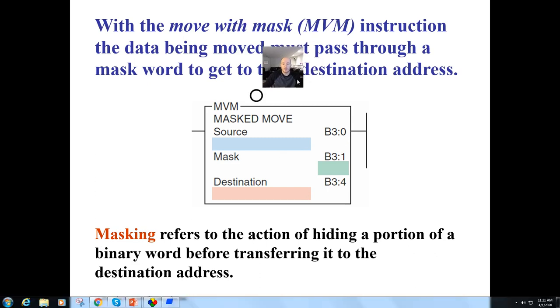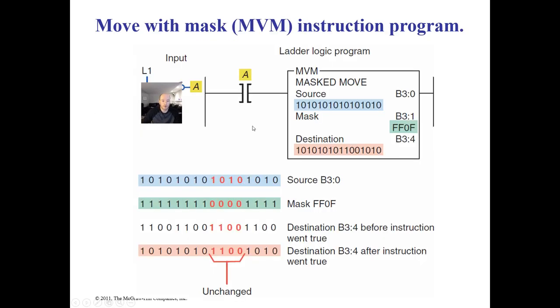The next thing that we want to talk about is the masked move instruction. And this one can be a little confusing. The practical applications for it aren't a ton, but they are out there. And I just want you to be familiar with it, just in case you run across it out there in someone's program. Basically, it moves whatever is in your source to your destination, as long as the mask allows it. And this refers to the action of hiding portions of the binary word before transferring it to the destination address.